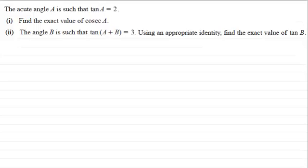Okay, welcome back if you had a go. So, first of all then, find the exact value of cosec A. Well, we're given that angle A is an acute angle, less than 90 degrees then, and it's such that tan A equals 2.